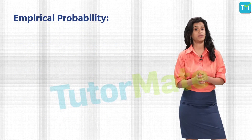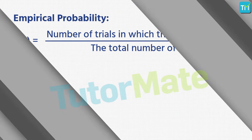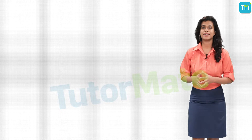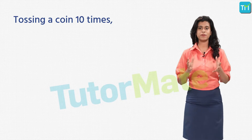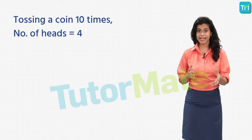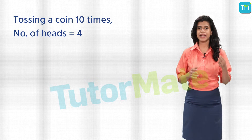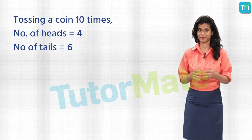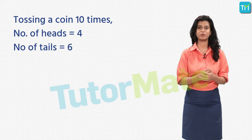I define the empirical probability of event E — P(E) — as equal to the number of trials in which the event happened upon the total number of trials. For example, in an experiment of tossing a coin 10 times, suppose heads appeared 4 times and tails appeared 6 times.